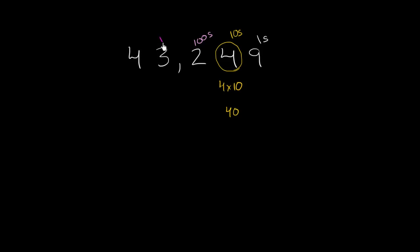This 3 is in the thousands place, so it represents three thousands. And then the 4 on the left is in the ten thousands place, so it literally represents four times 10,000, or four ten thousands, or 40,000.